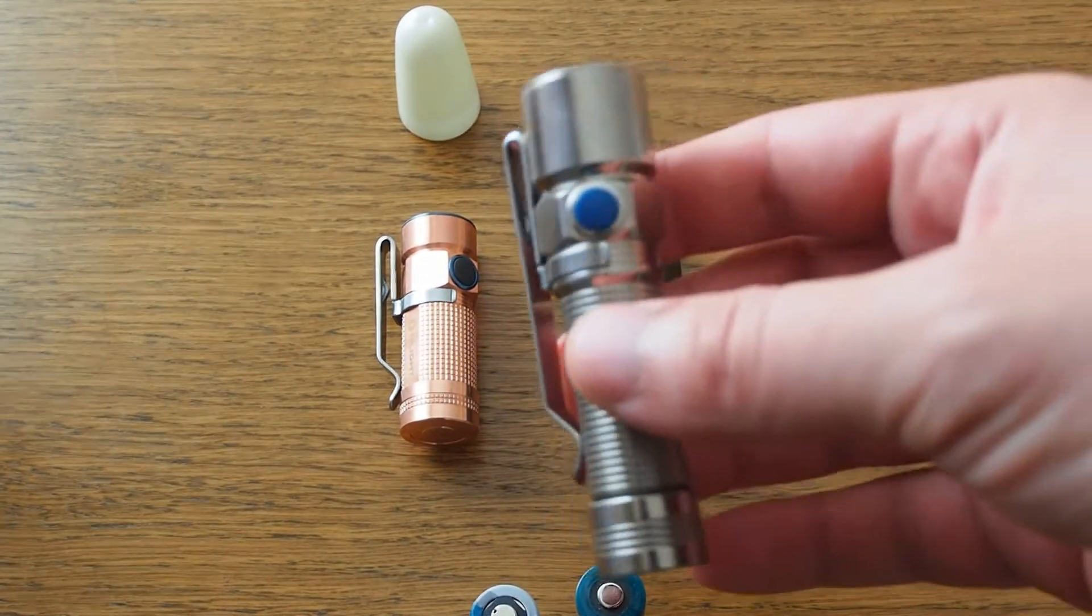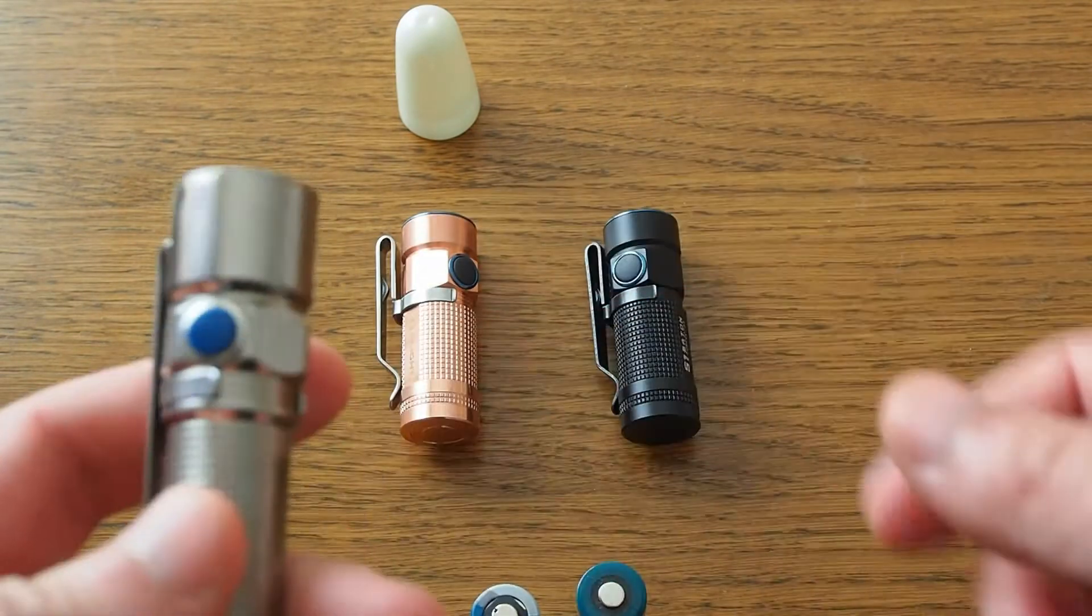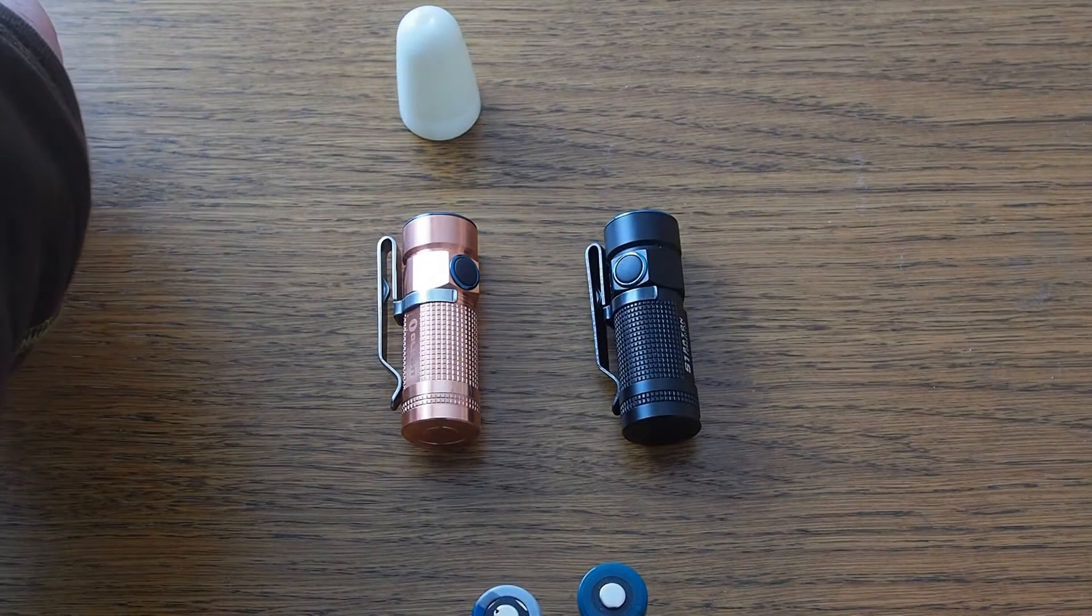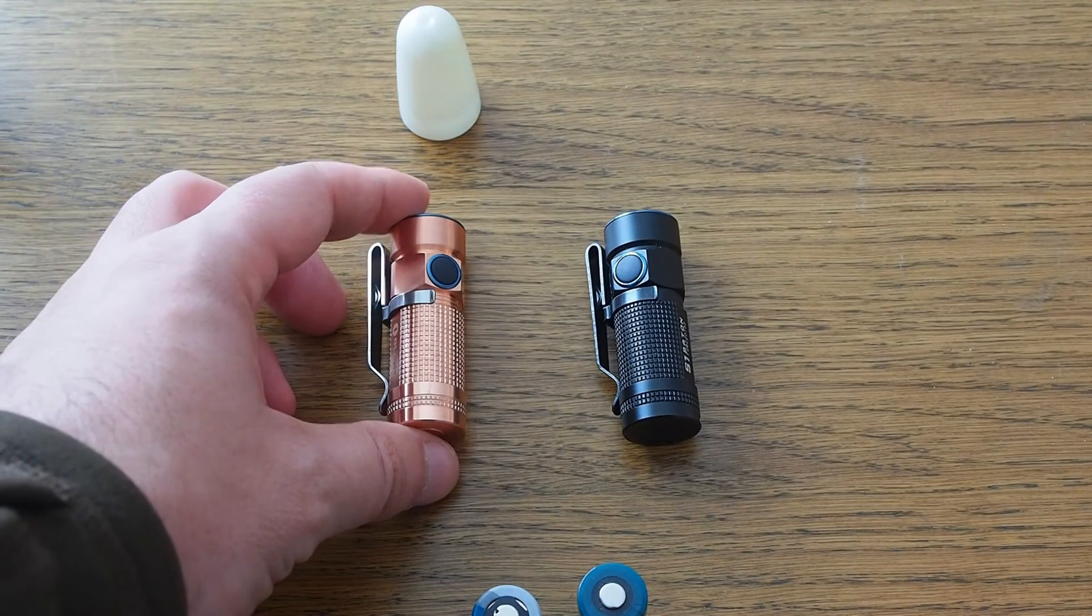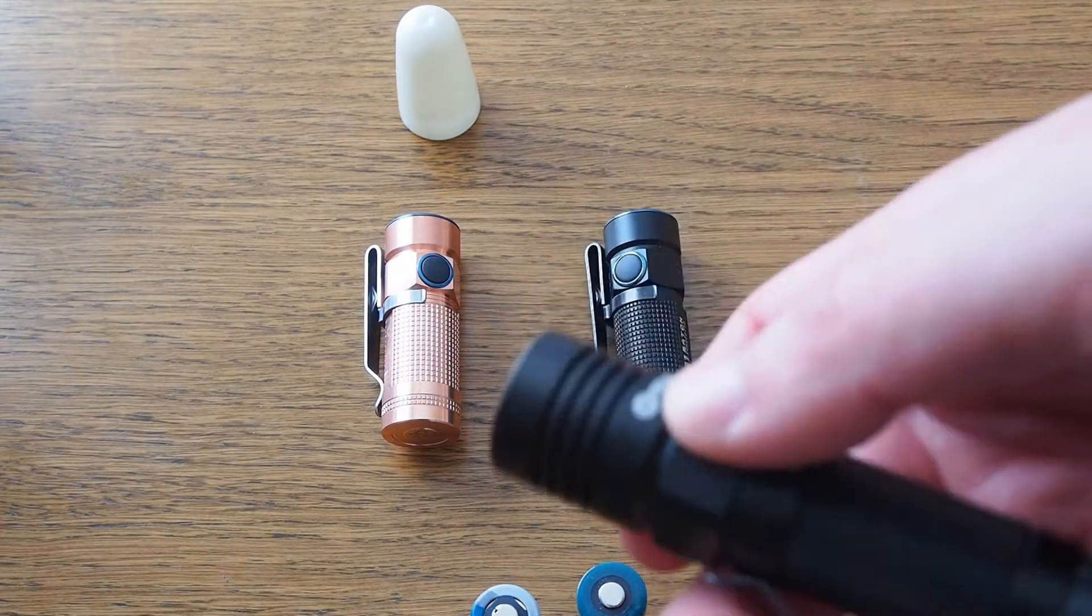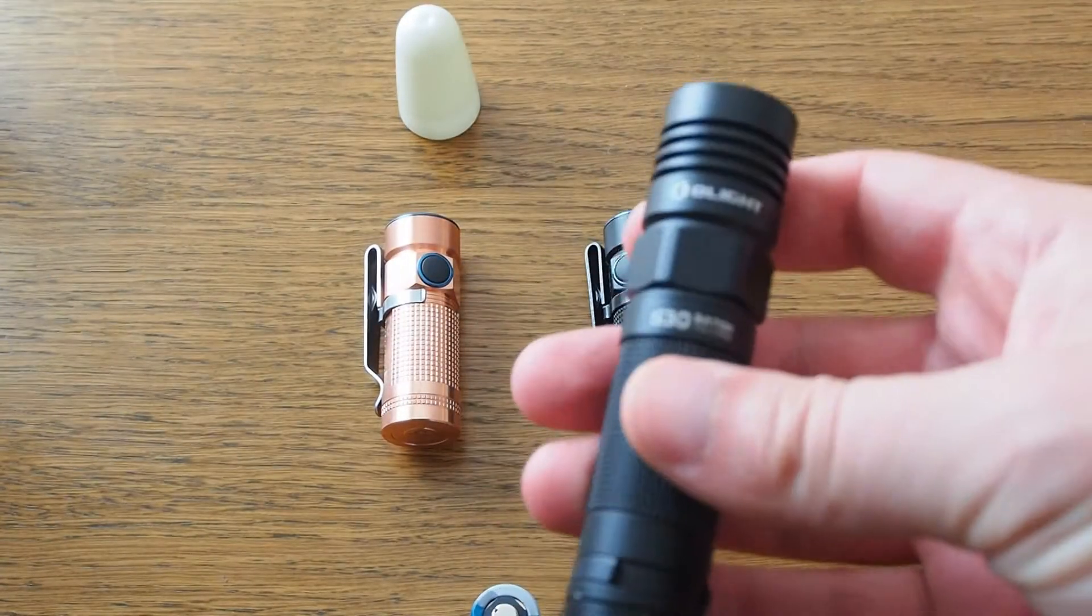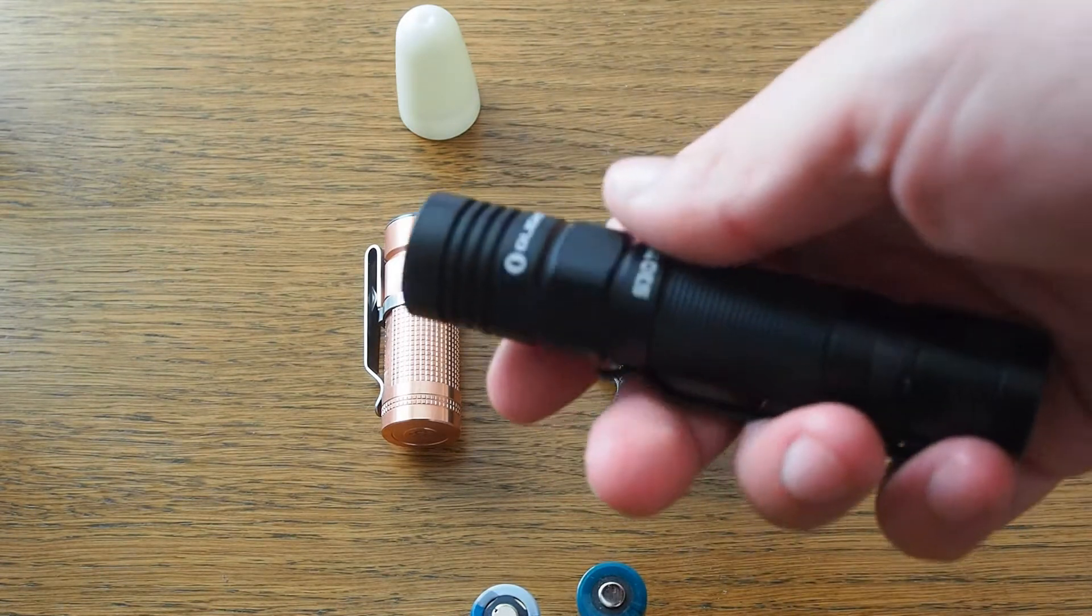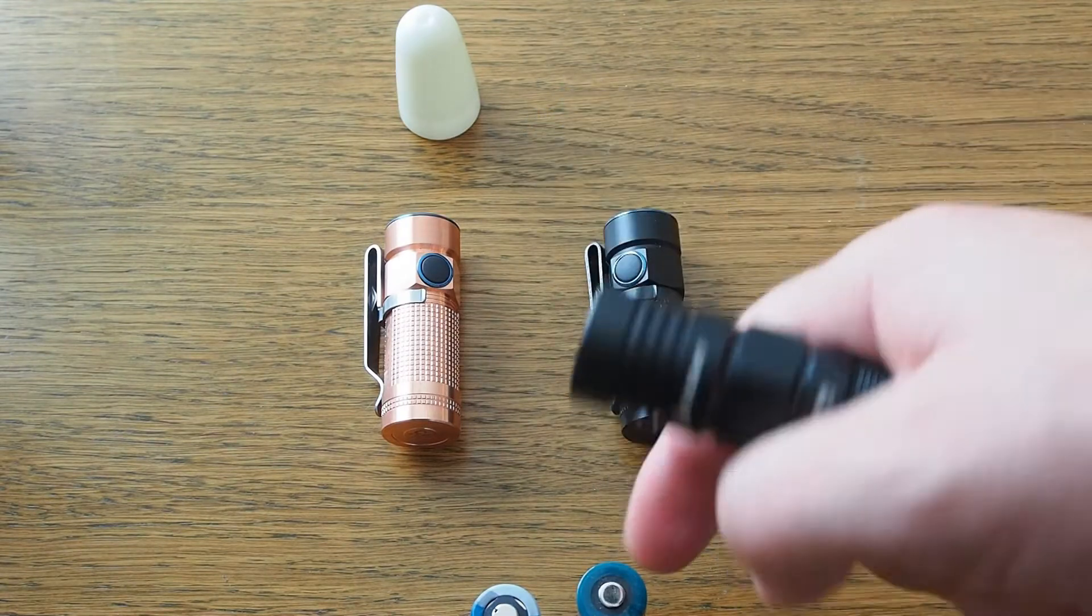But when it comes to performance and longer run times, the CR123s are better for small EDC lights. If you want something higher output, here we have the Olight S30 baton, which runs on 18650s or two CR123s.